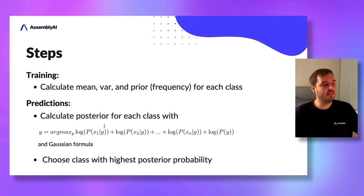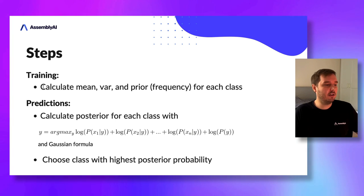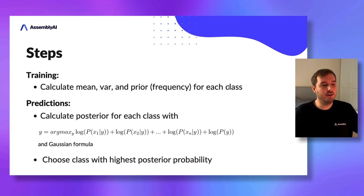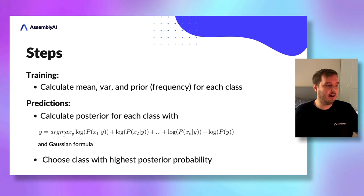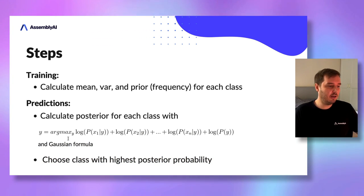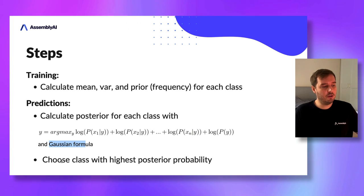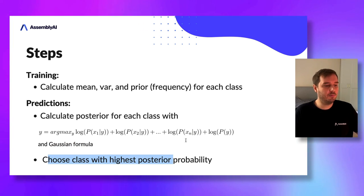To summarize the steps: in the training step, we calculate the mean, variance, and prior — the frequency for each class — using our training set. Then in the prediction step, we calculate the posterior for each class using the formula we've seen, plugging in the Gaussian formula for the class conditional probabilities, and we simply choose the class with the highest posterior probability.